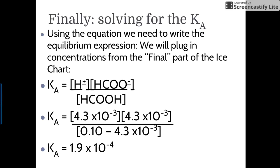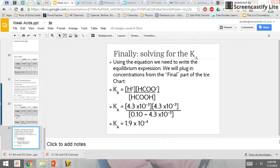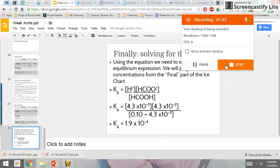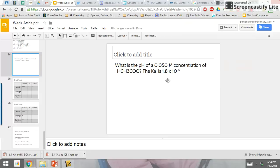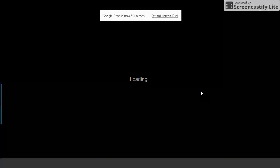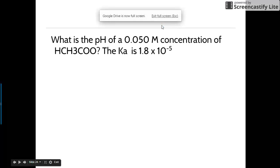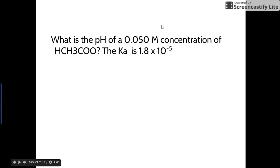Now, let's do one where you use Ka to solve for pH, like the problem that I explained on the board. So here is our problem. What's the pH of a 0.050 M solution of acetic acid? Ka is 1.8 times 10 to the negative 5. You'll notice this time I give you Ka, and I ask for pH.